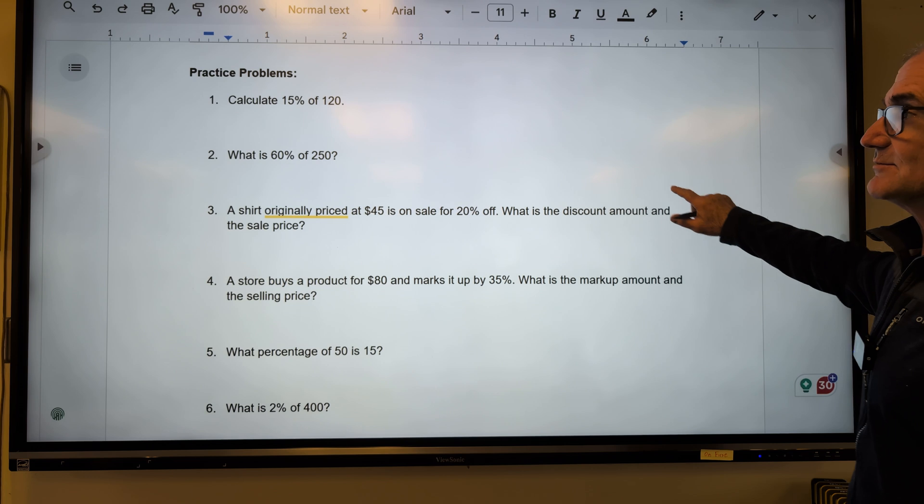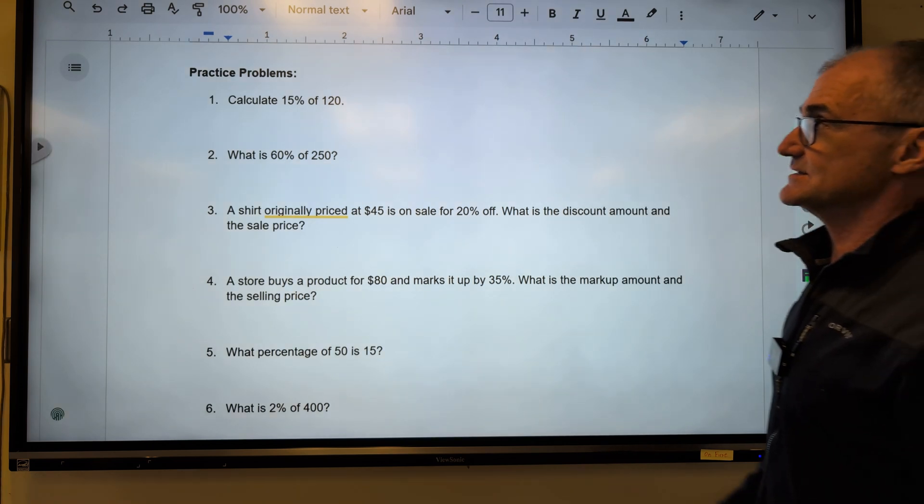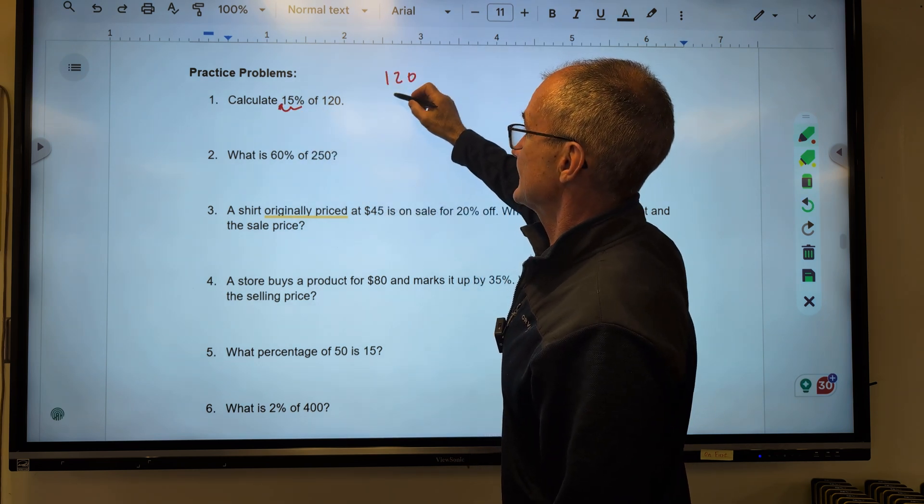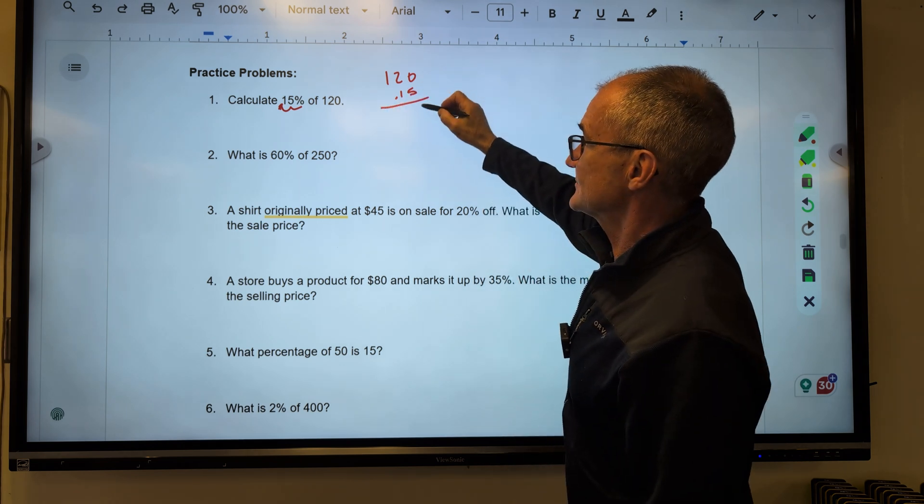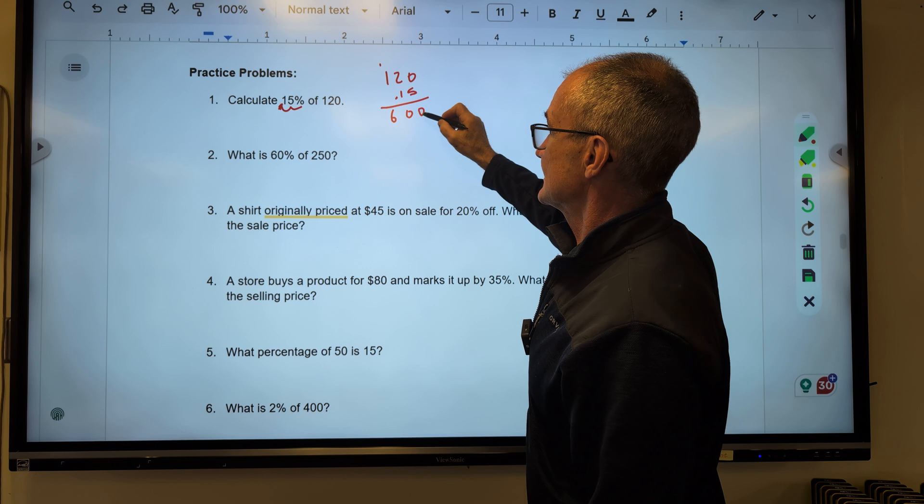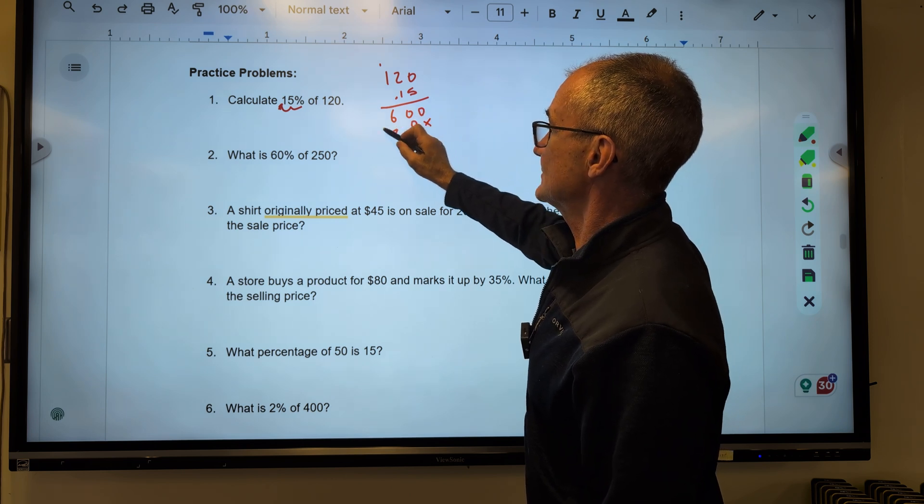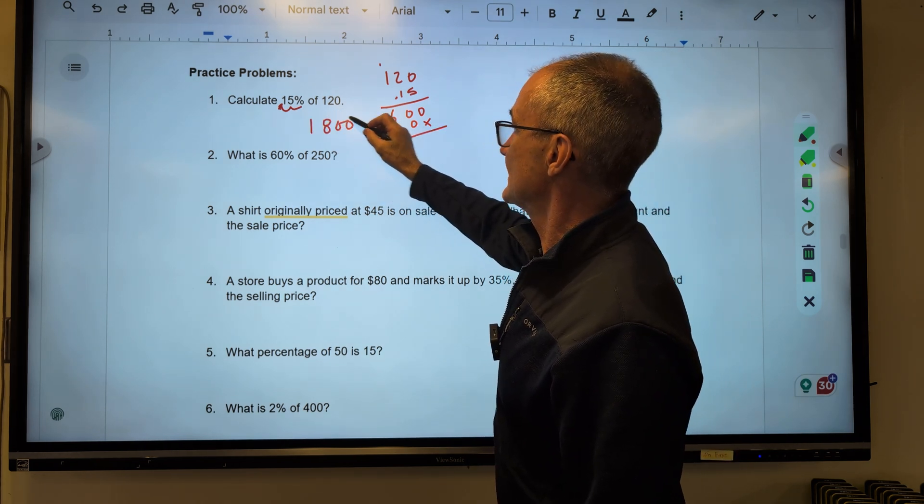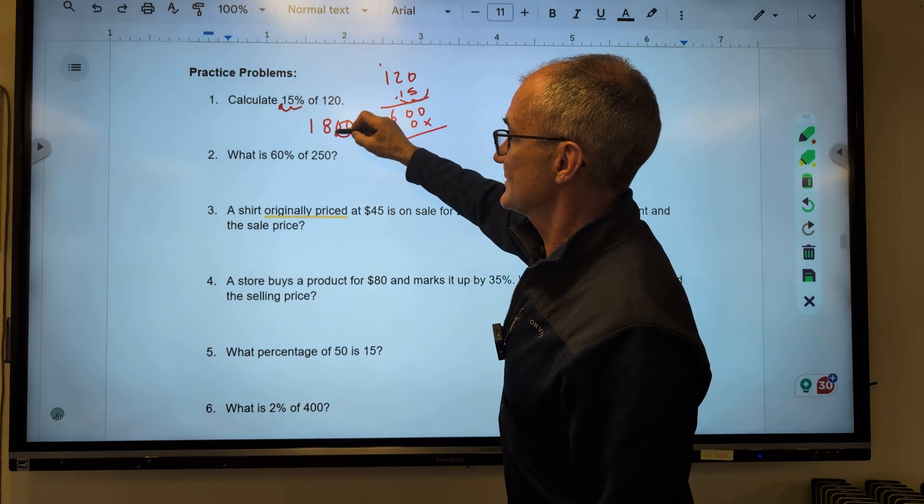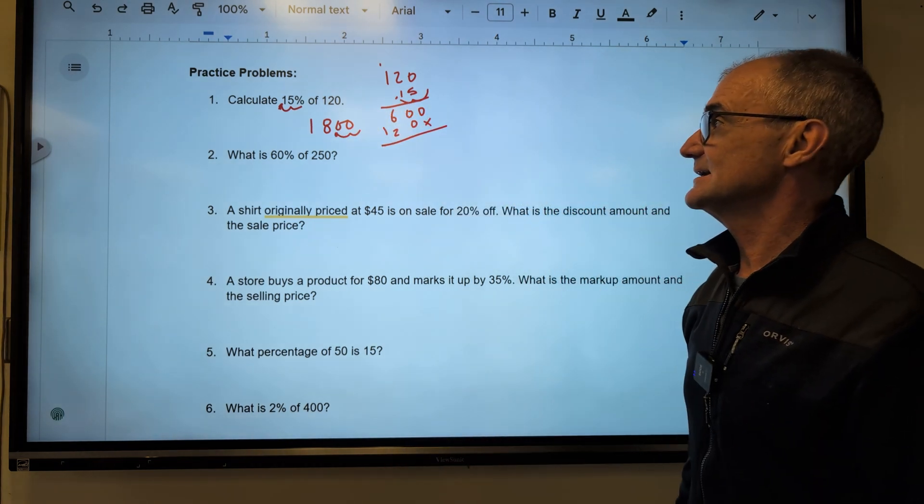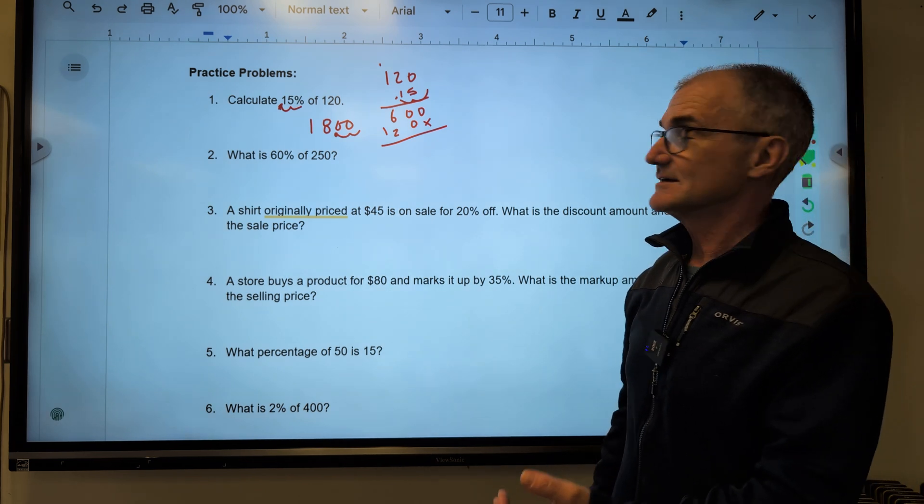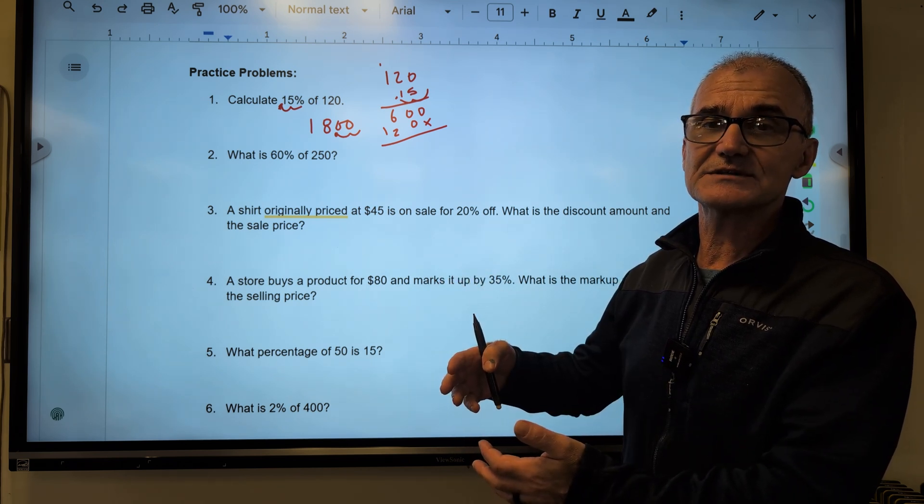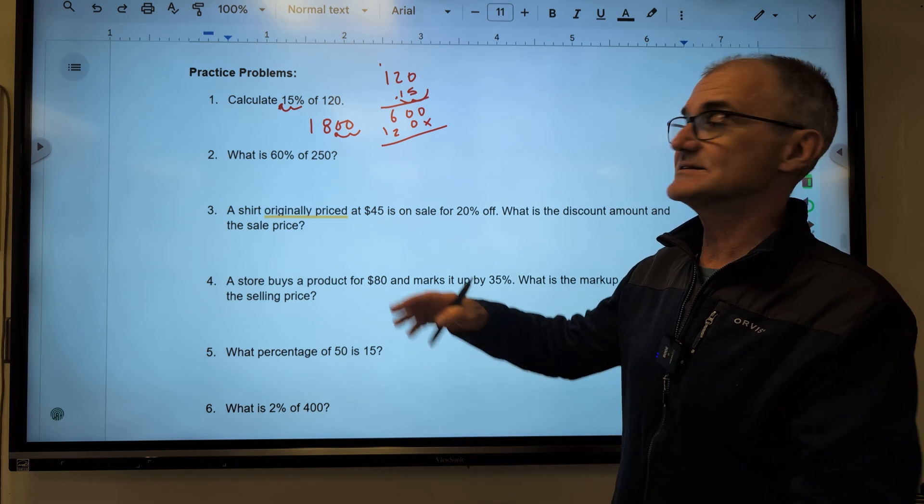So let's do some practice problems here. Calculate 15% of 120. First thing I do is I move that decimal over one, two to get .15. 120 times .15 gives me zero, 10. Carry the one, five, six. Placeholder, zero, two, one. Add straight down to get one, eight, zero, zero, zero. So I get one, eight, zero, zero. And then the decimal is over one, two. One, two. So 15% of 120 is 18. That kind of makes sense, because I know 10% of 120 would be 12. Well, half of 12 is 6, so that would be 5%. And that 5 and the 10 together give me 15, or the 12 and the 6 to give me 18.